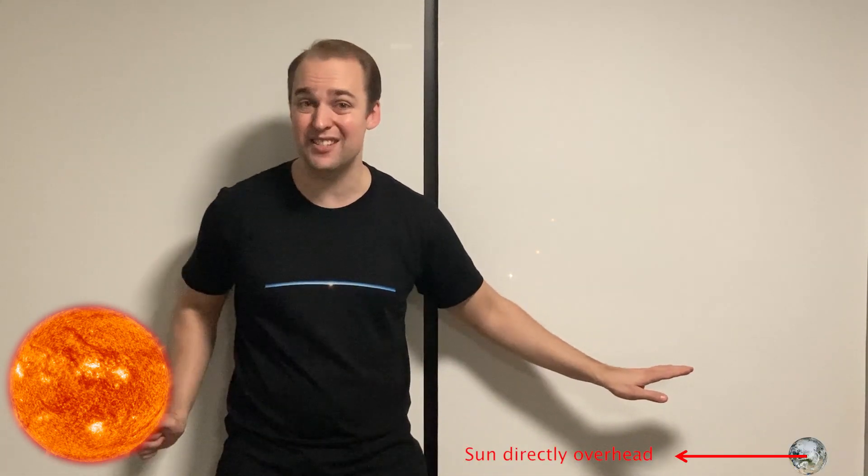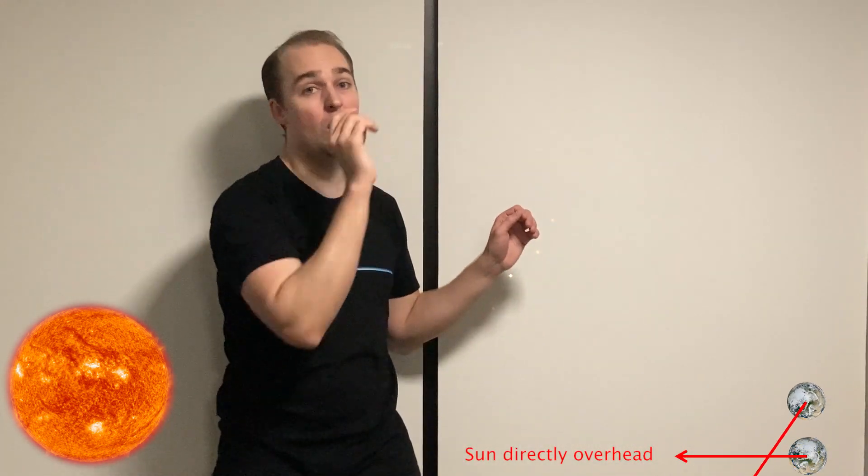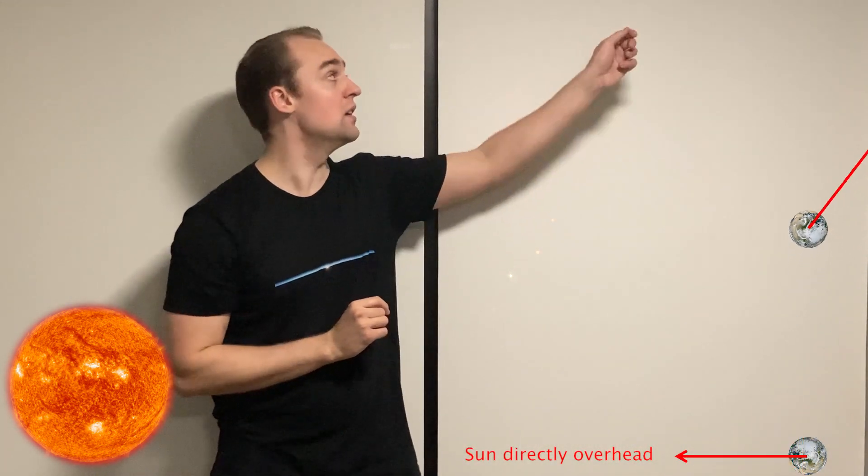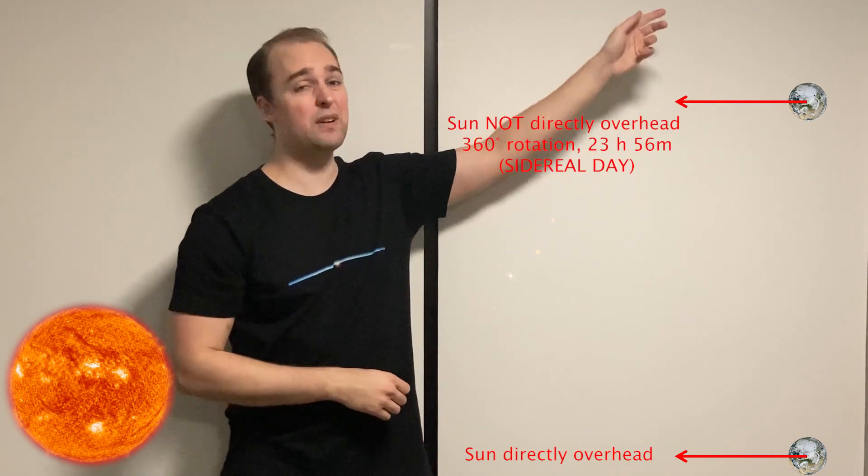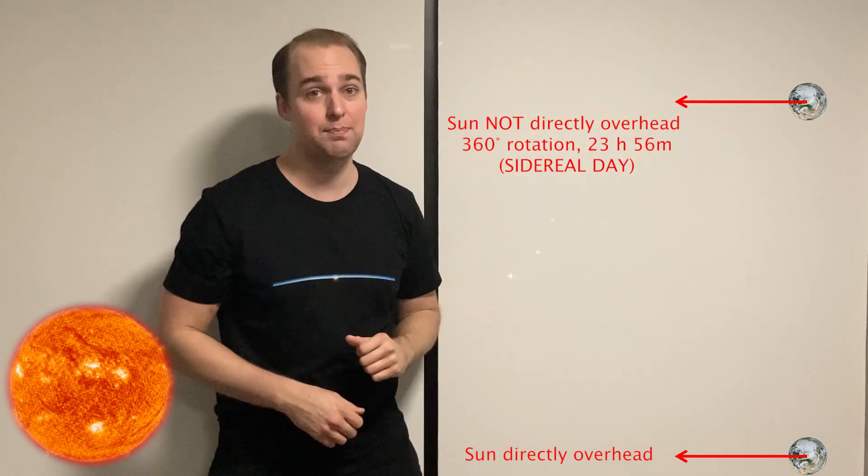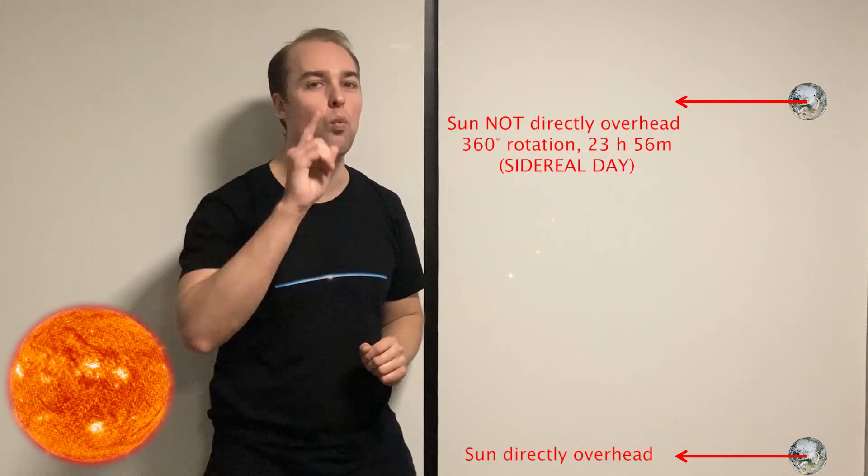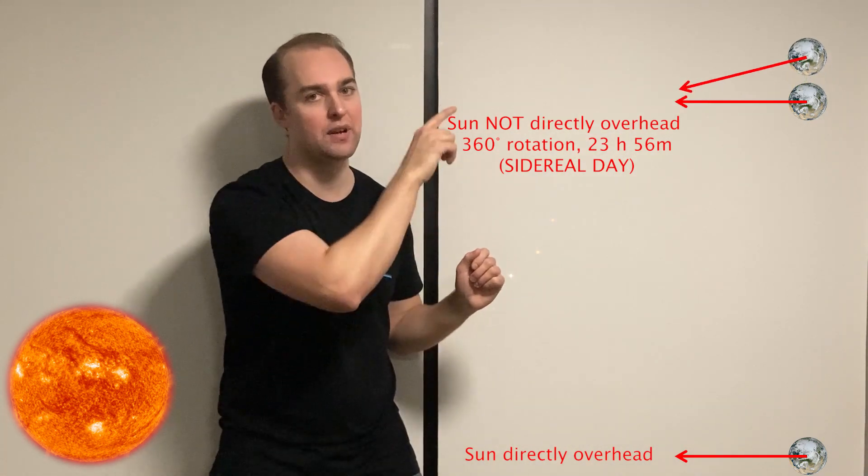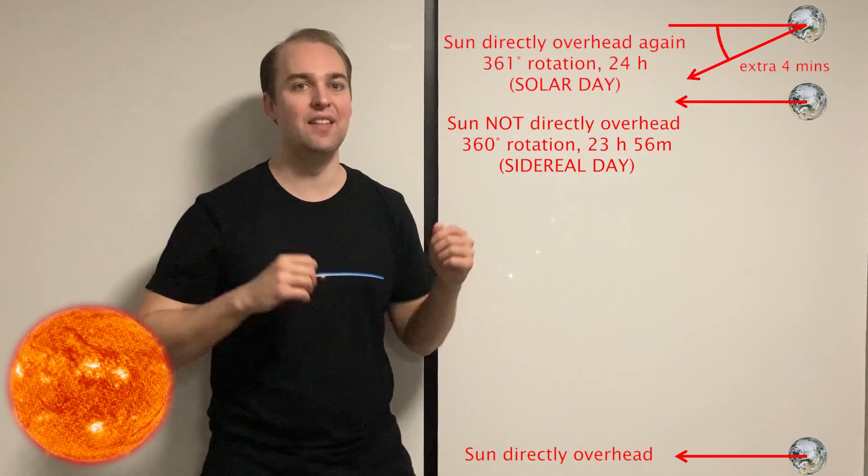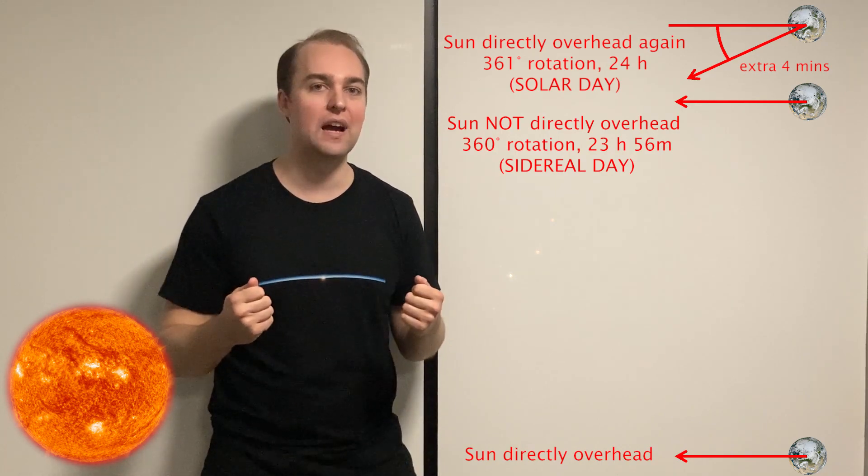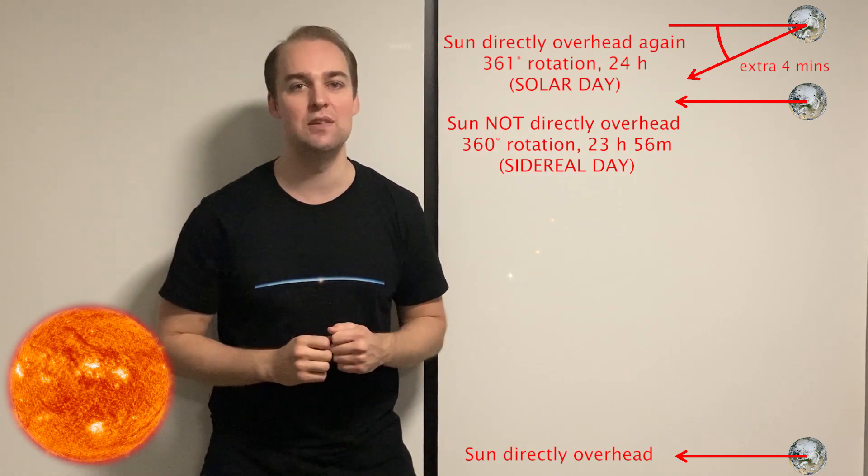which means that the point that was previously pointing towards the Sun will no longer, after one full 360-degree rotation, be pointing towards the Sun anymore. It's pointing towards some random empty point out in space. The Earth actually needs to rotate one extra degree before the same point is pointing towards the Sun. And that is why a day is 24 hours and actually 361 degrees.